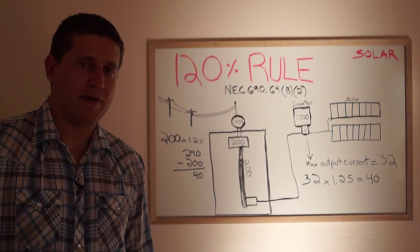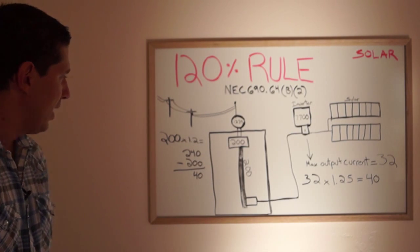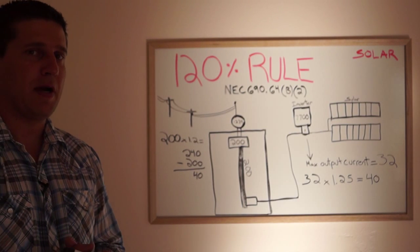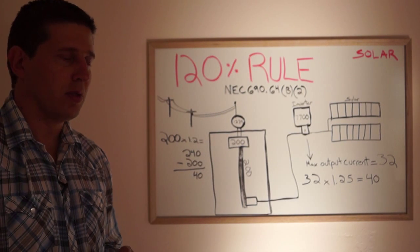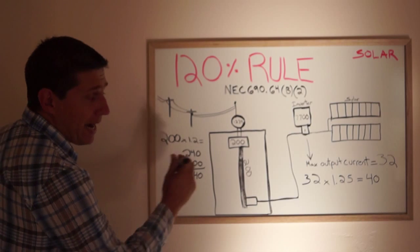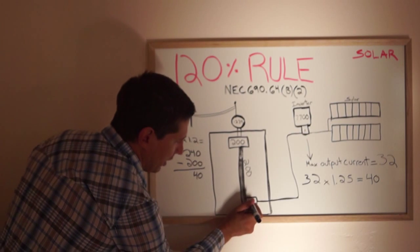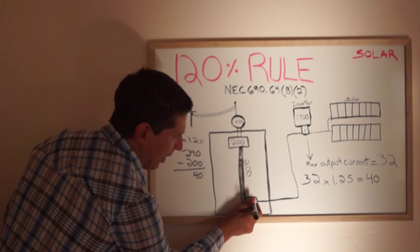The 120% rule states that you can't have more than 20% more of the bus bar capacity loaded with solar. So that means we have a max amps of the solar is 40 amps on that breaker.